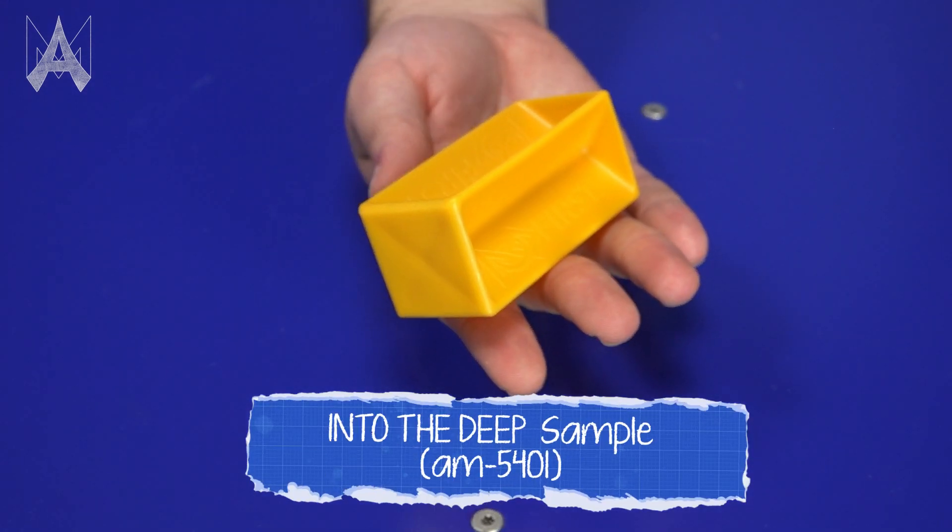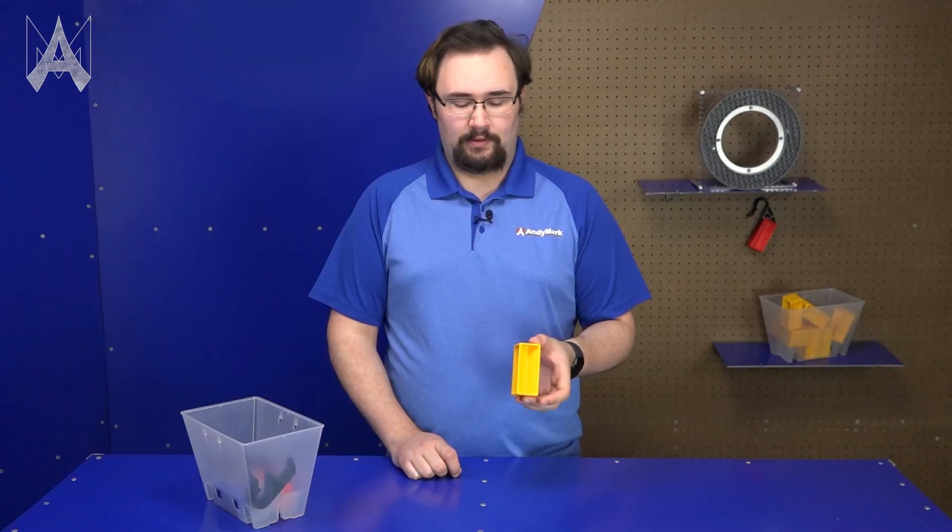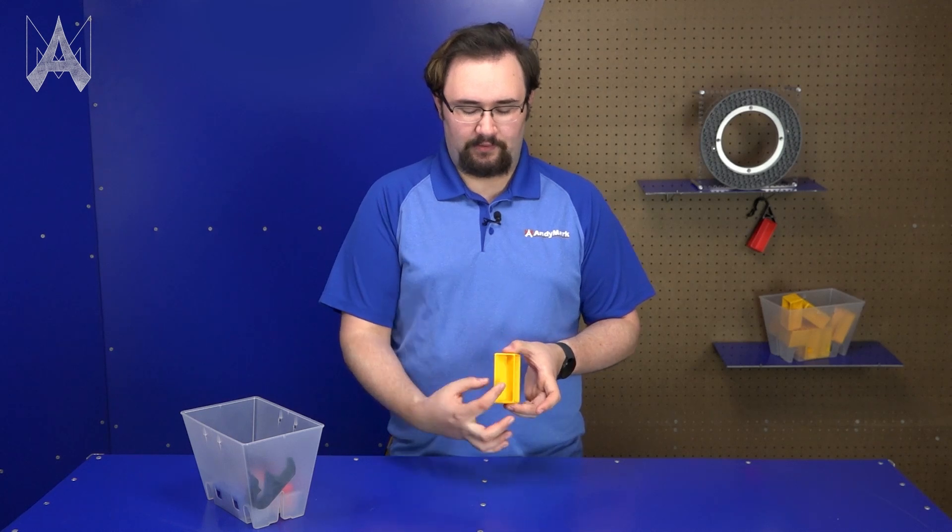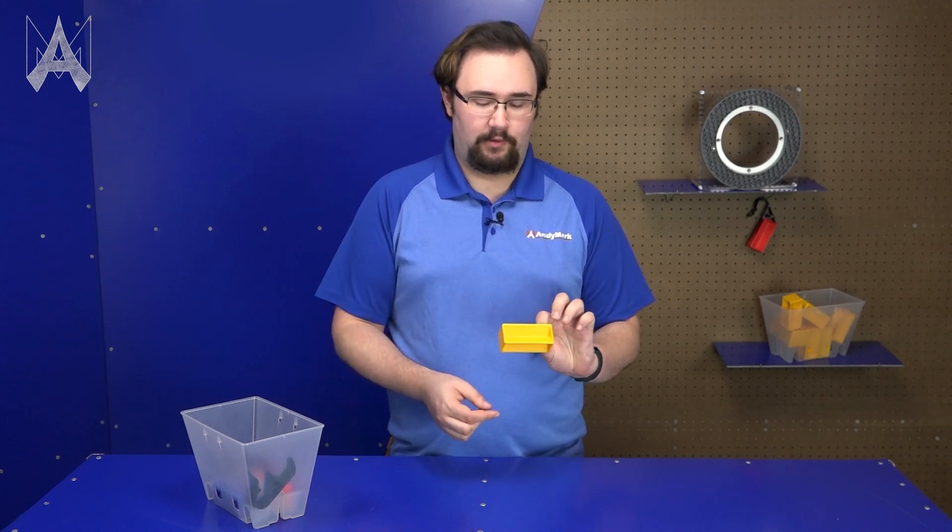This is a sample, a one and a half inch by one and a half inch by three and a half inch rectangular prism. It's got triangular cutouts in it, creating flanges on each of the four corners that make it easier for a robot to grab either with a claw or with another mechanism.